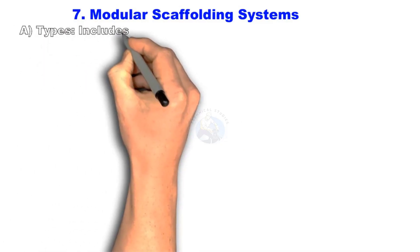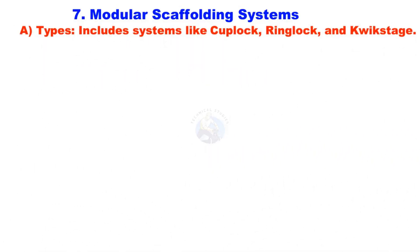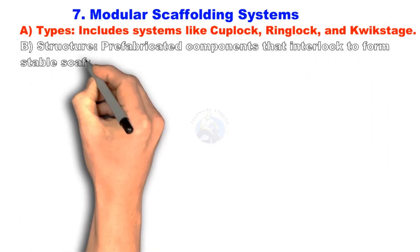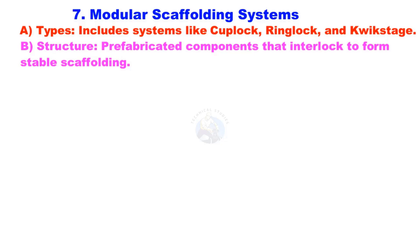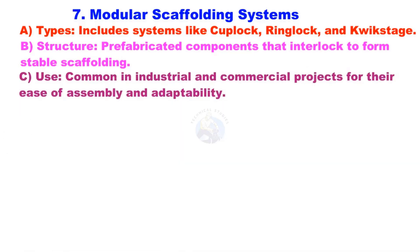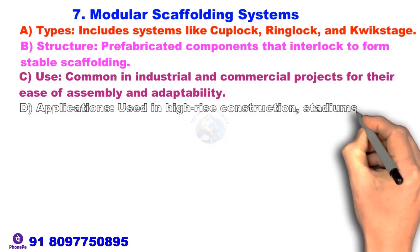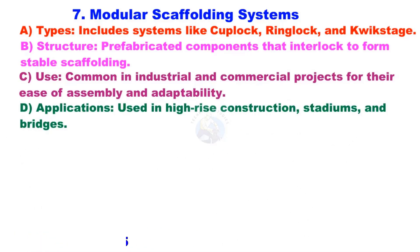Modular Scaffolding systems. Types include systems like cup lock, ring lock, and quick stage. These use prefabricated components that interlock to form a stable scaffolding. Common in industrial and commercial projects for their ease of assembly and adaptability, they are also used in high-rise construction, stadiums, and bridges.